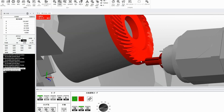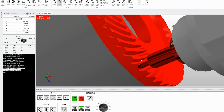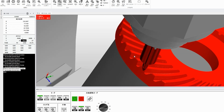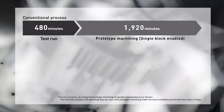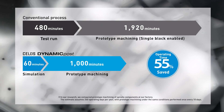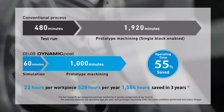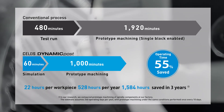The simulations allow you to view hard-to-see machining areas from various angles, which is difficult to achieve on the actual machine. In one example from our factory, using Celos Dynamic Post reduced lead time by 55% compared to not using it.